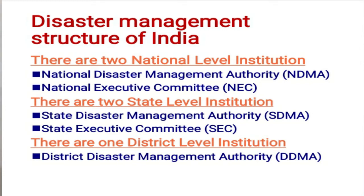We have two national level institutions and two state level institutions and one district level institution. National level institutions are the National Disaster Management Authority and the National Executive Committee. State level institutions are the State Disaster Management Authority and State Executive Committee. District level institution is the District Disaster Management Authority.